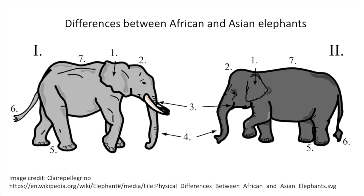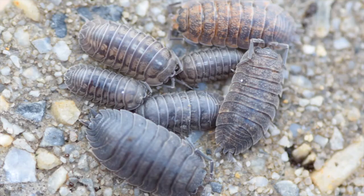Students often learn to distinguish between animals that are iconic and compelling but not necessarily relevant to where they live. I remember when my own children were in first grade, they learned the differences between African and Asian elephants — characteristics of animals they'd never encounter in everyday life. Isopods are different. Looking at this image, I can tell there are three different species of isopod.